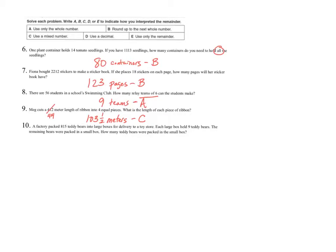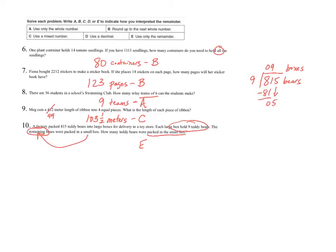Question 10 says a factory packed 815 teddy bears into large boxes for delivery to a toy store. Each large box held nine teddy bears. The remaining bears were packed in a small box. How many teddy bears were packed in the small box? All we care about is the remaining bears — so I can tell right away I want Strategy E, where all I care about is the remainder. Taking 815 bears, splitting into groups of nine: 9 does not go into 8, but goes into 81 nine times; 9 does not go into 5. So I have 5 bears left over — those five bears go into the small box. My answer is 5 bears.